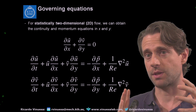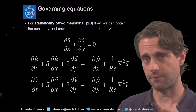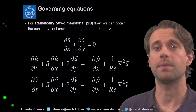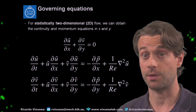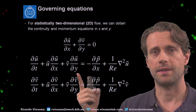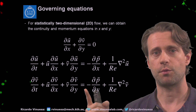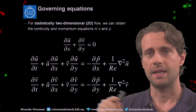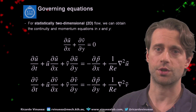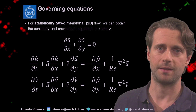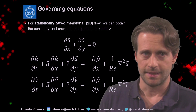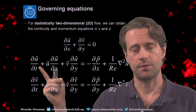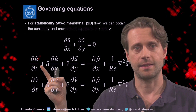Remember that an incompressible flow is a flow in which the density is not changing, so that simplifies a little bit the conservation of mass. And then the second and third equations would be the conservation of momentum in the x and y directions, respectively.